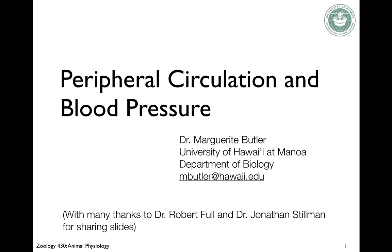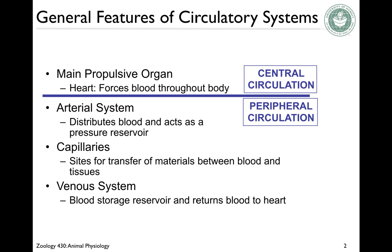Aloha, physiologists. Today we're going to talk about circulation. The circulatory system is composed of the main driving organ, which is the heart — that's the central circulation — and the peripheral circulation, which is pretty much everything else: the arterial system, the capillaries, and the venous system.